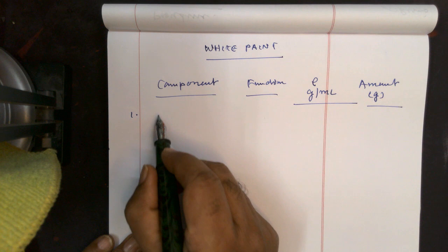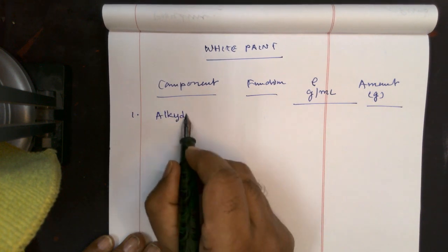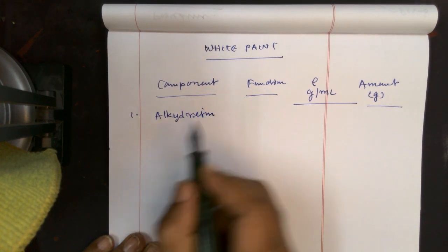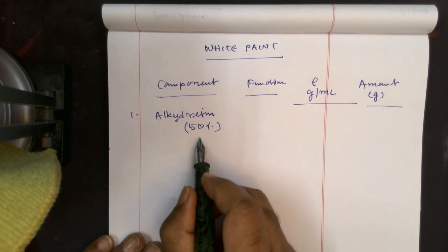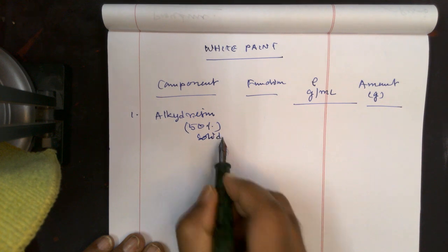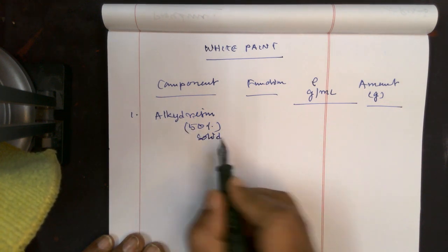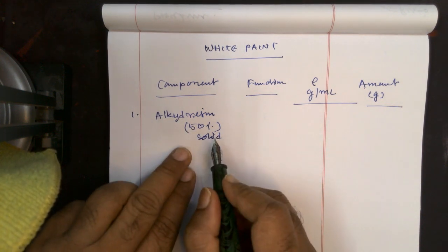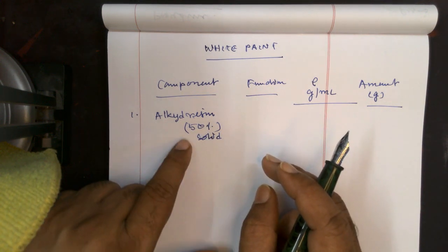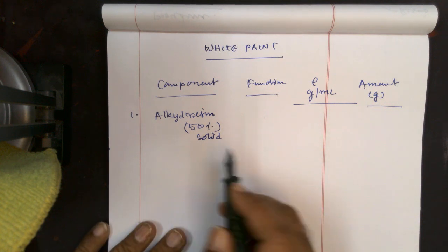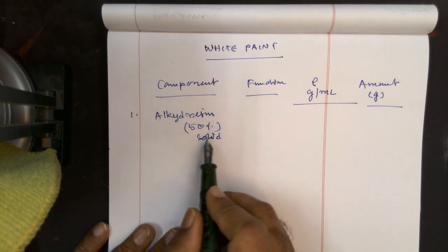Alkyd resin - we have worked out as 50% solid. When I say 50% solid, that is, if I take 100 ml, it contains 50 gram by weight, the solid part of alkyd.